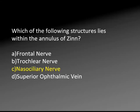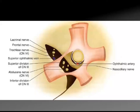Pat yourself on the back if you learned that one already and you can move on to another topic. For those who need a quick refresher, here is that picture again demonstrating your nasociliary nerve within the annulus, along with the superior and inferior divisions of cranial nerve three and your abducens nerve. Remember, our LFTs are outside the annulus.